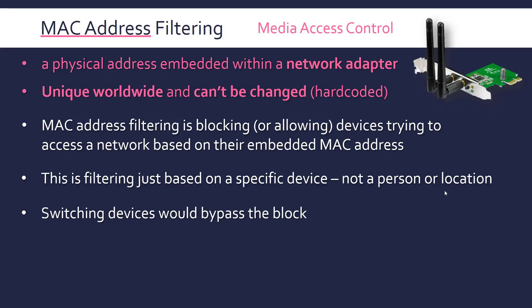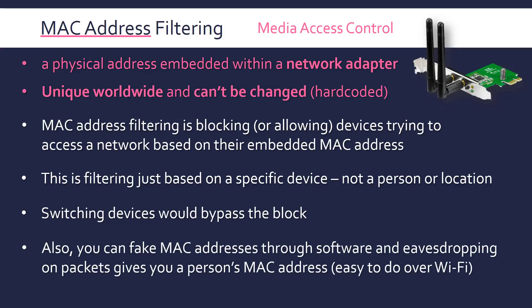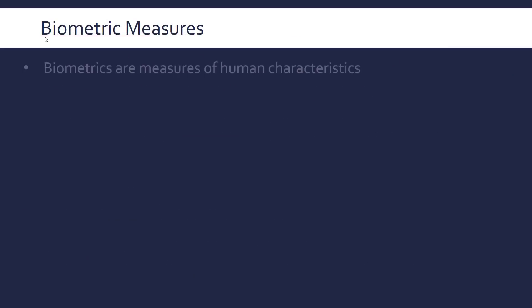The issue is that if you switch devices or replace the network adapter with a new one, you'll bypass the filtering unless you're using an allow list rather than a block list. Another issue is that you can quite easily fake MAC addresses through software. Also, packet sniffing over Wi-Fi is straightforward — the packet header contains the MAC address, so you can view someone else's MAC address just by looking at it if the data isn't encrypted.